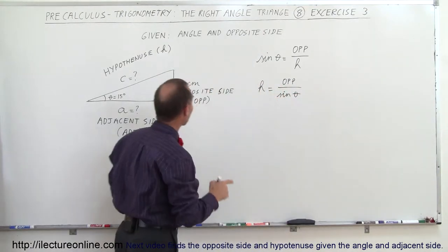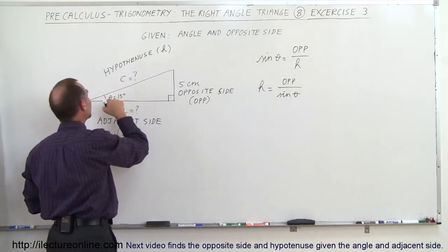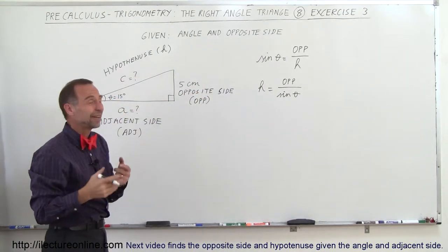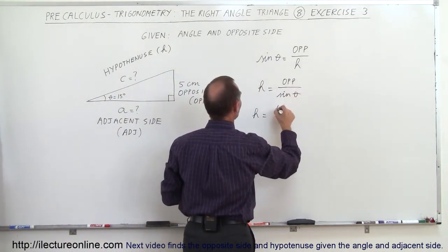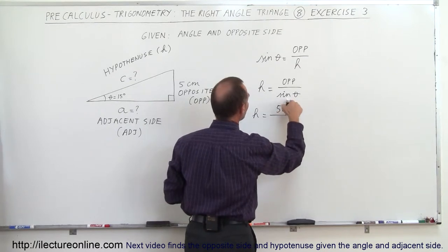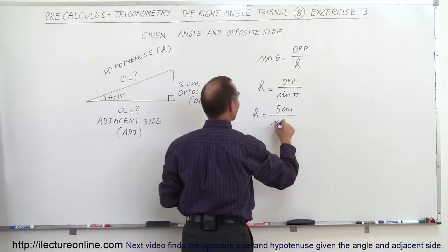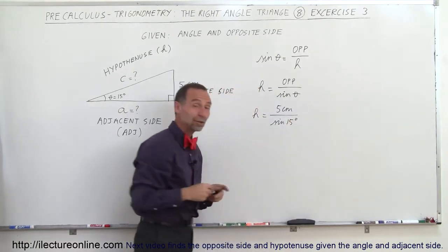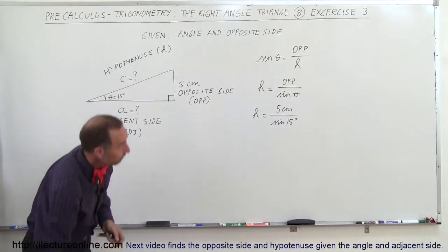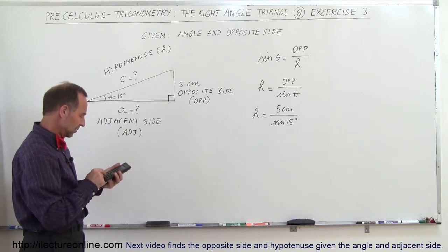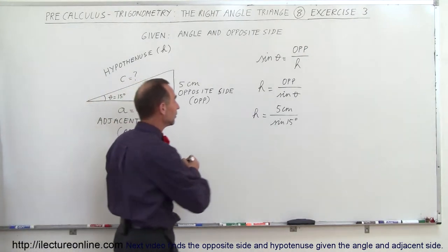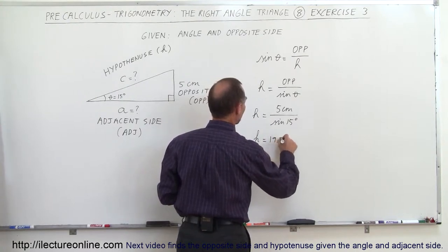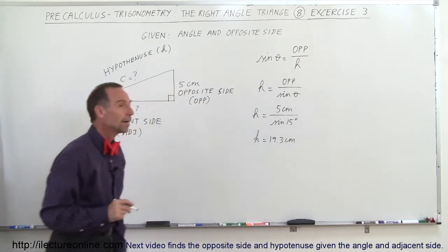The reason why this works is because I know what the opposite side is and I know what the angle theta is, so I can find the sine of theta. In other words, if I want to find H the hypotenuse, H is equal to the opposite side which is 5 centimeters divided by the sine of theta, and theta is 15 degrees — so that's the sine of 15 degrees. Now all you need is a calculator. So H is equal to 5 divided by the sine of 15 degrees, which equals 19.3 centimeters.